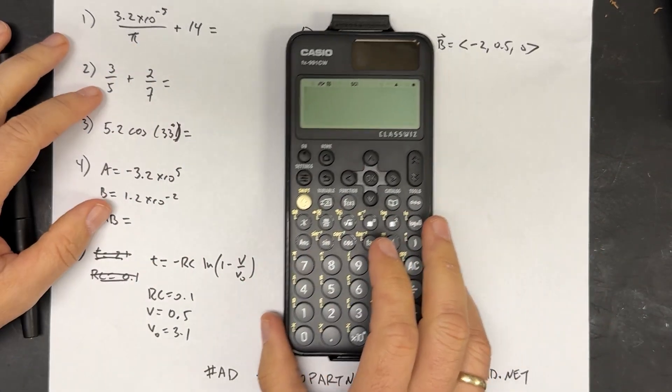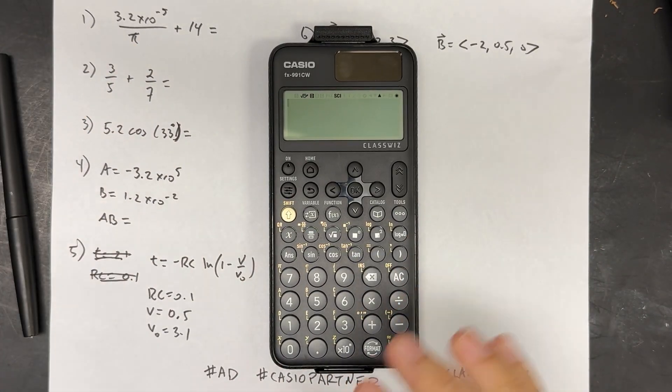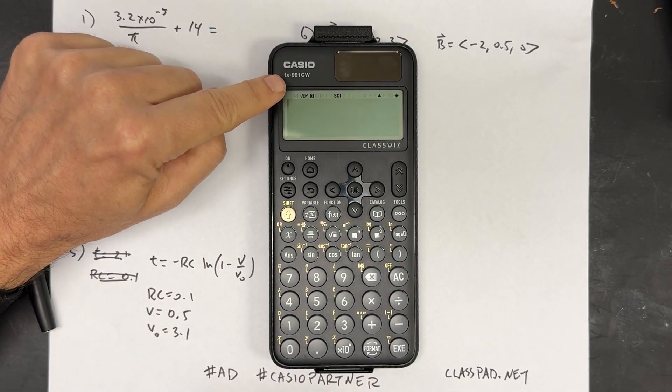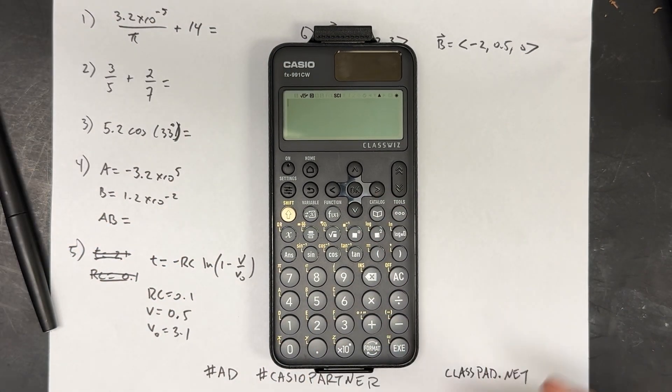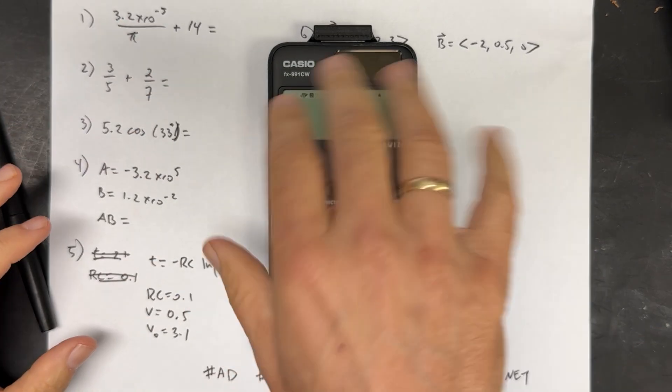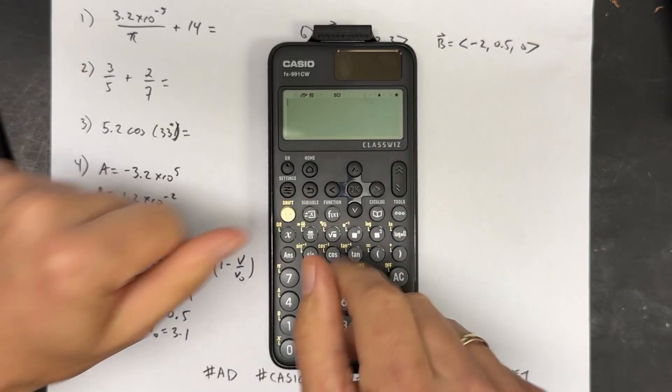Let's take a look at this Casio calculator. This is a sponsored video by Casio. They sent me this Casio FX991CW ClassWiz calculator. I want to show you two features, and then we're going to do all these calculations. I'm going to walk you through them so we can all do the same thing.